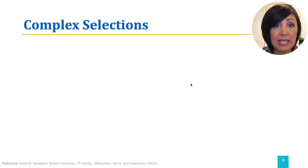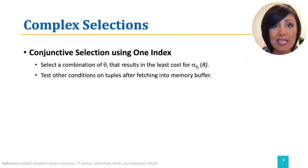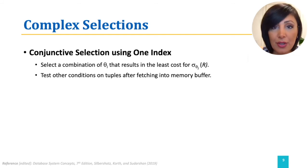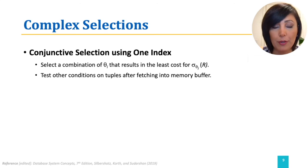What if we have complex select conditions but no matching index with a composite key? We try to find out if there is an access path other than a scan using the index key, at least for one of the simple conditions. If available, we apply that, select the tuples accordingly, and then test other conditions on those tuples after fetching them into the memory buffer. Note that this only works for conjunctive selection.